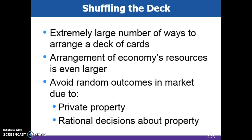Another illustration of why command economies consistently fail where market systems succeed is by looking at a deck of cards. The number of possible ways to arrange a deck of 52 cards is so large it is incomprehensible — imagine the number of ways to allocate resources. The reason we do not have random outcomes is because of private property and people's ability to make decisions about their own property that will make themselves better off and not worse off.